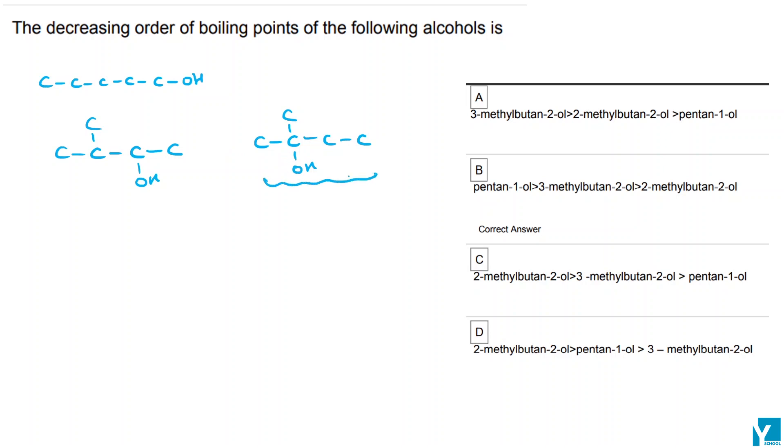In the last case, the steric hindrance to hydrogen bonding will be the most, so the boiling point will be the least. So the order will be pentane-1-ol, 3-methylbutane-2-ol, and 2-methylbutane-2-ol. B is your correct answer.